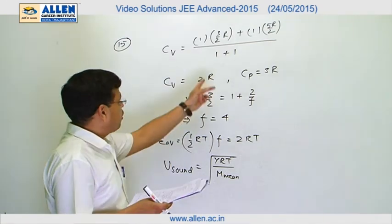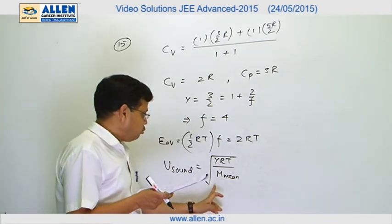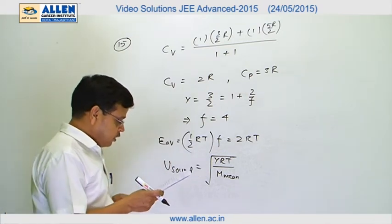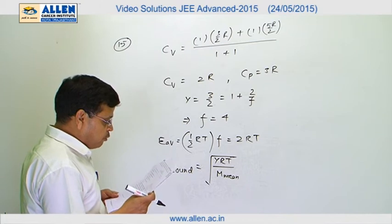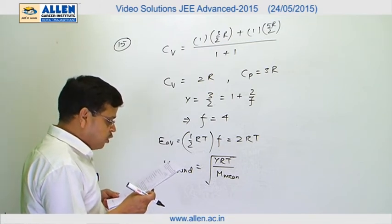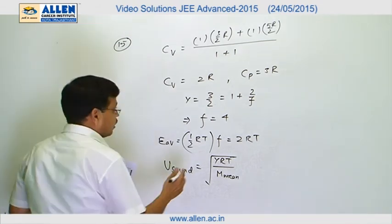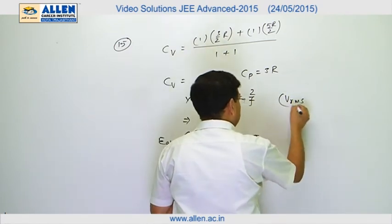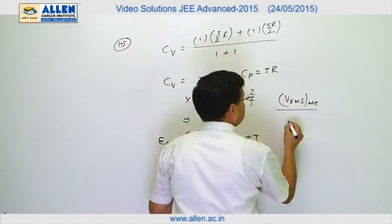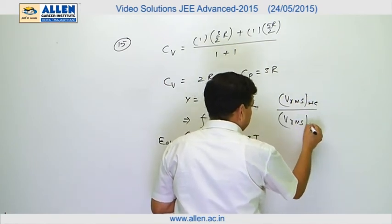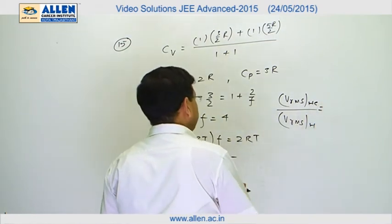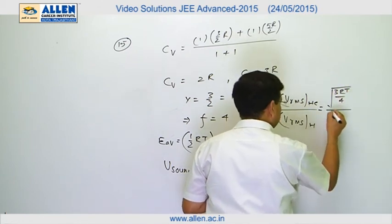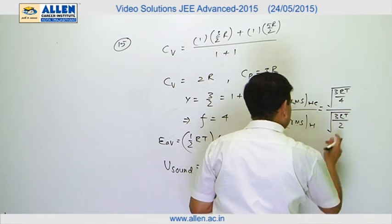So we can find the mean molecular mass of the mixture, and we know the molecular mass of helium and hydrogen, so we can easily compare the velocity of sound in these two gases. The other option is the ratio of rms speed of helium to rms speed of hydrogen. V rms in helium divided by V rms in hydrogen is under root 3RT by 4 divided by under root 3RT by 2.